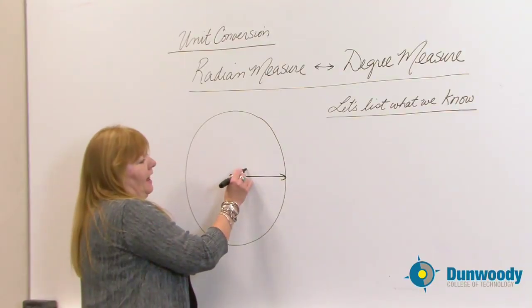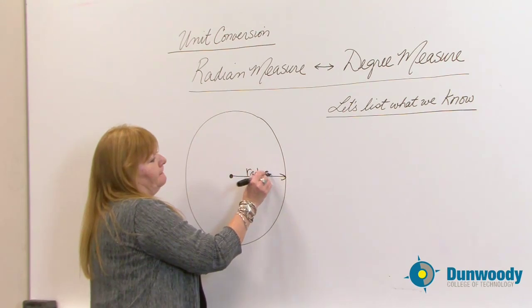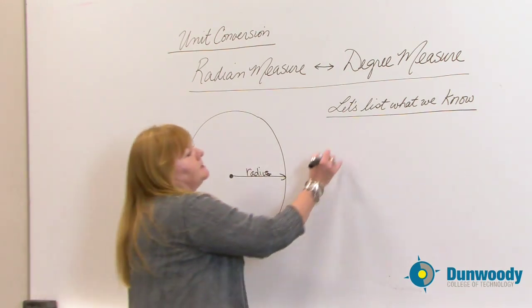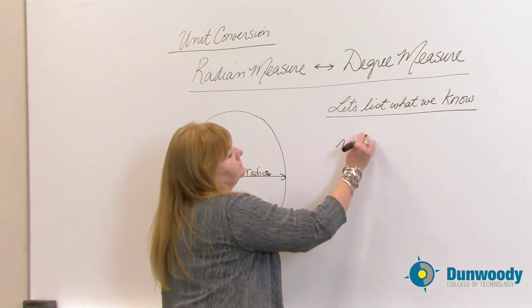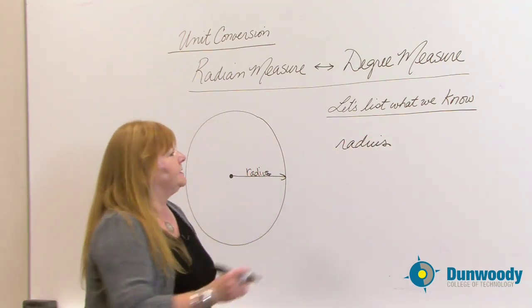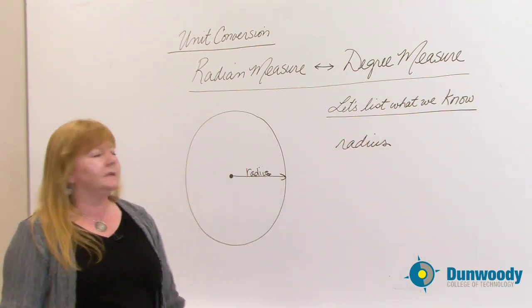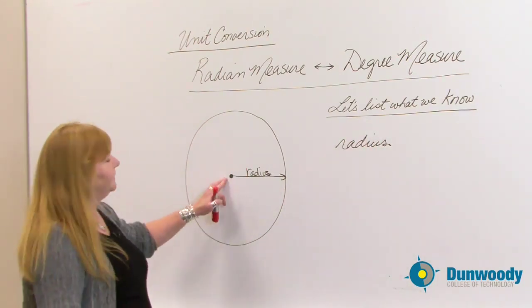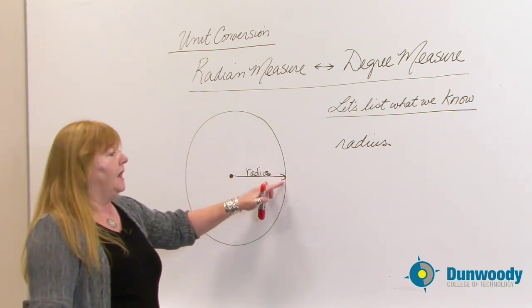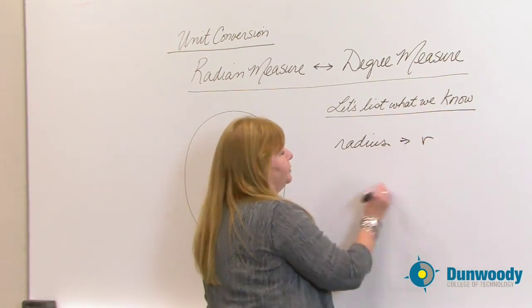As you know, half of the diameter is what we call the radius. The radius is half of the diameter, starting at the center of the circle and walking out. And we can use radius to help us measure something called circumference.